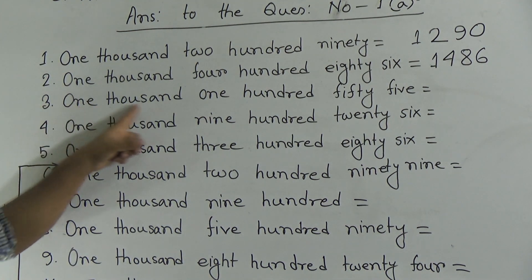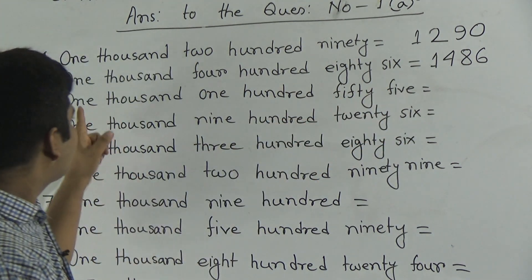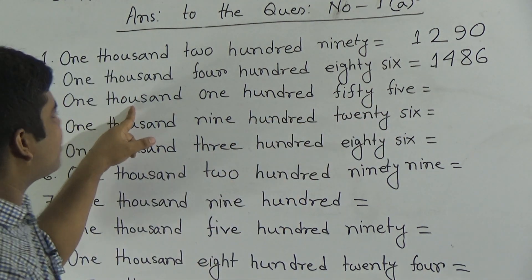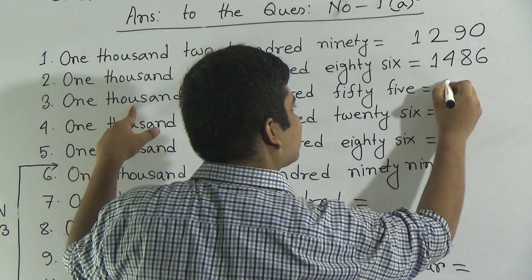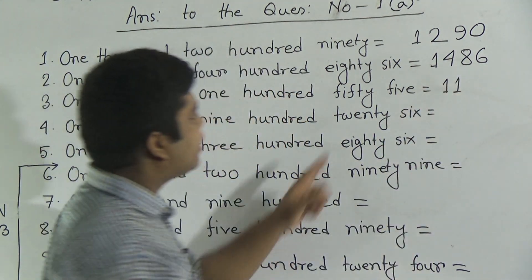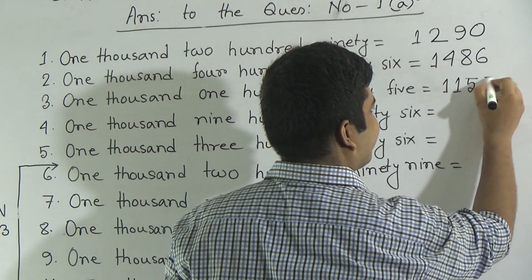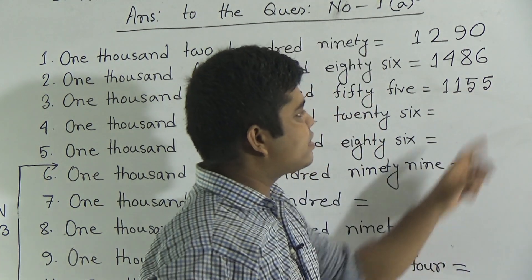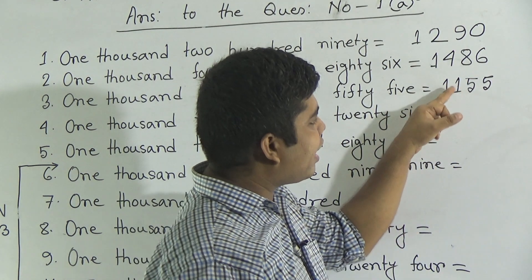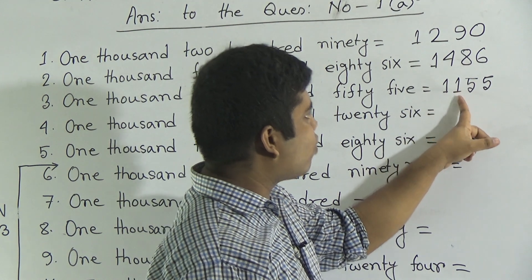Question number 3: 1155. Dear students, notice 1155. So 1000 — write 1 first. 100 — again, we write 1. After that, 55. What do you mean by 55? 5 and 5. 5 is in 1's place, 5 is in 10's place, 1 is in 100's place, and 1 is in 1000's place. So we read this number as 1155.